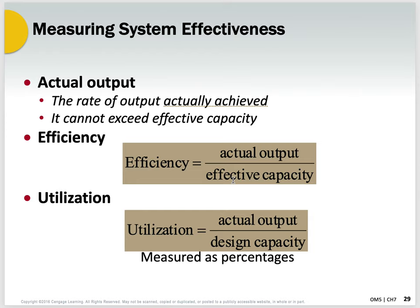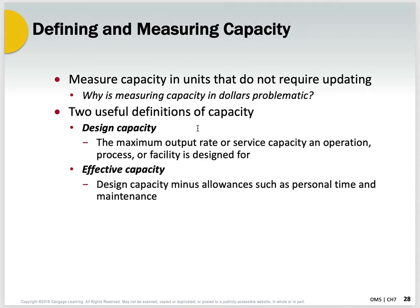Then we define two things that people often use almost interchangeably, but they're not the same: efficiency and utilization. Both are based on what you call actual output. No matter what you said you were going to do — the design capacity is what the designer tells you you can do if you run 24/7; effective capacity is what you're claiming you can do minus allowances for shift changes, lunchtimes, absenteeism, maintenance, and unforeseen events. You might even factor in a little supply delay.